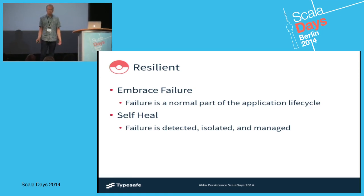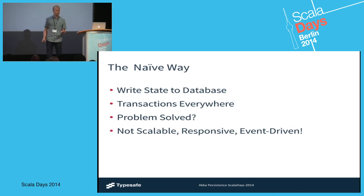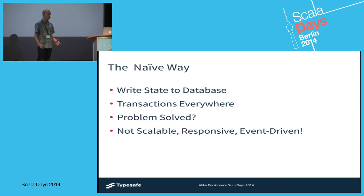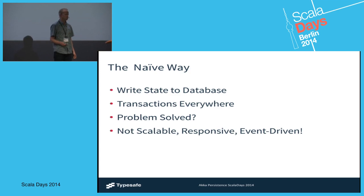Trying to be resilient, I have some application state. I store everything in some database — feels good. But I'm touching different parts of the database, so I maybe need to add some transactions so I know what's going on. Problem solved, right? But what if I'm having hundreds or thousands of entities that I need to manage this way? Doesn't really scale — you've introduced a number of locks and you have usually one big contention point. So how do we solve that?